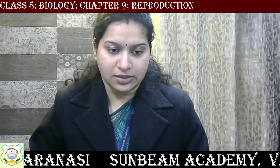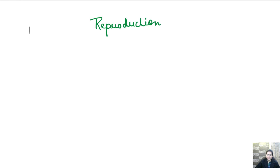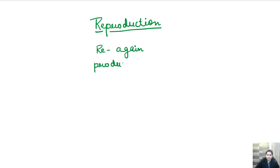So what does reproduction mean? This topic, reproduction, includes two terms. If we split it, we will see there are two terms. First is 're' and second is 'production'. 'Re' means again, and 'production' means making. So we can write it as 'making again'.